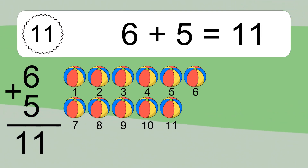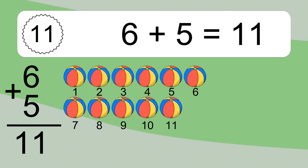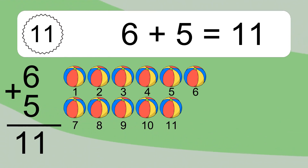6 plus 5 equals what? Let's count it. 1, 2, 3, 4, 5, 6, 7, 8, 9, 10, 11.